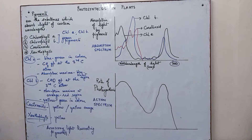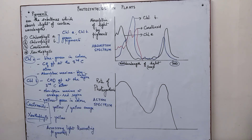Chlorophyll A is the most important pigment involved in photosynthesis. The absorption spectrum — the set of wavelengths absorbed by the pigments — shows chlorophyll A as the main pigment responsible for light absorption. Chlorophyll A is also the most abundantly available plant pigment.